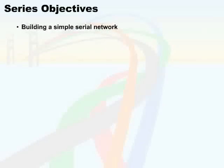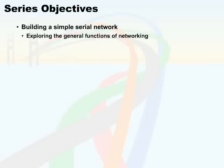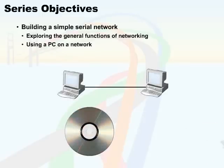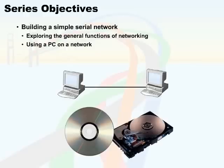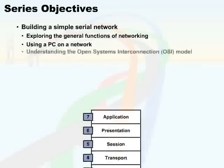The first step is building a simple network, where we will focus on exploring the general functions of networking. We want to understand what makes a network actually function and what some of its main components are. We also want you to understand how to use a PC on the network — what software and hardware components are actually used. We also want to understand the Open Systems Interconnect, or OSI model, which is a general framework that's been in use for almost 30 years. This model provides us with a foundation for standards-based troubleshooting, learning, and implementation of different technologies.